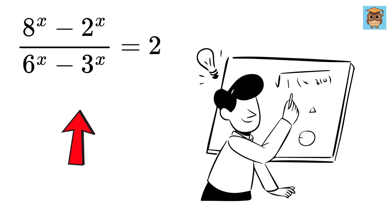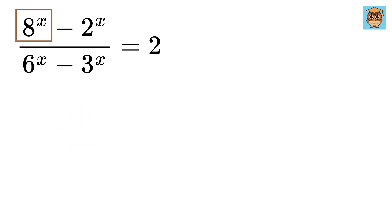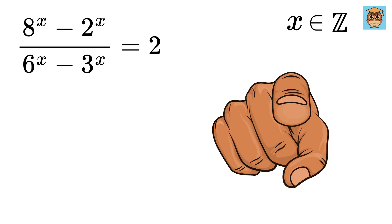Today we will be solving this amazing equation, which is 8 raised to x minus 2 raised to x divided by 6 raised to x minus 3 raised to x equals 2. We need to find all values of x where x belongs to an integer value. Can you solve it?